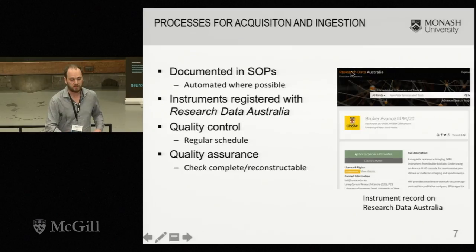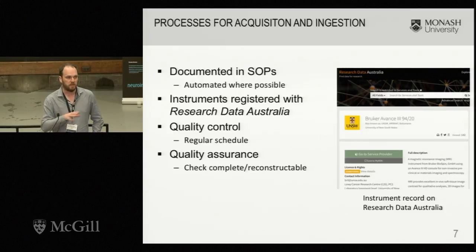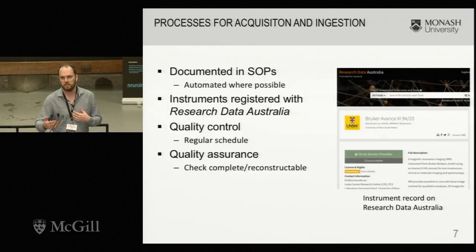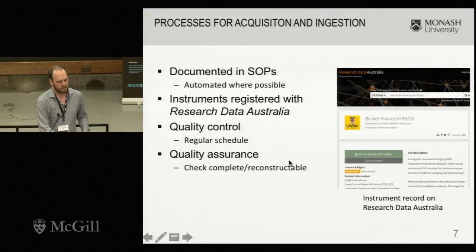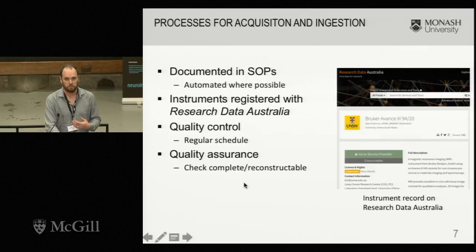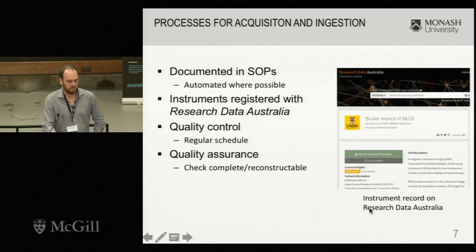All instruments from which data is collected get registered on the central Research Data Australia website, so you can know exactly the model of the instrument where the data was collected. If we're storing data long-term, in 15 or 20 years someone may not know whether the instrument at Monash Biomedical Imaging was one particular model or another, so we're really trying to make this data as useful long into the future as possible. We also have a regular quality control schedule and do basic quality assurance to make sure the data is complete, reconstructable, and free of errors from the ingestion process.